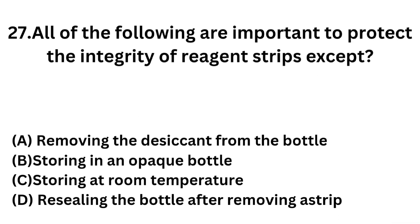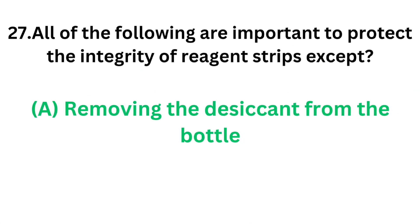Question number 27: All of the following are important to protect the integrity of reagent strips except — that means find out the statement which will not protect the integrity of a reagent strip. Option A: Removing the desiccant from the bottle. Option B: Storing in an opaque bottle. Option C: Storing at room temperature. Option D: Re-sealing the bottle after removing a strip. The correct answer is Option A, removing the desiccant from the bottle. If we remove the desiccant from the bottle, it will affect the integrity of reagent strips.